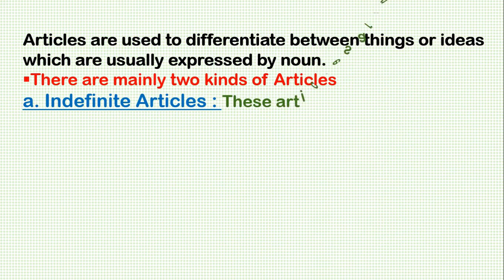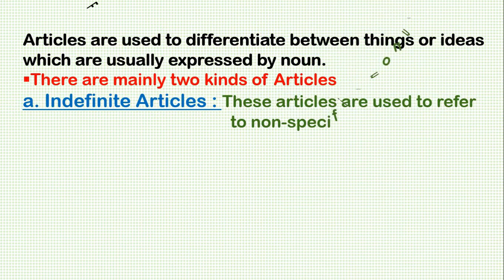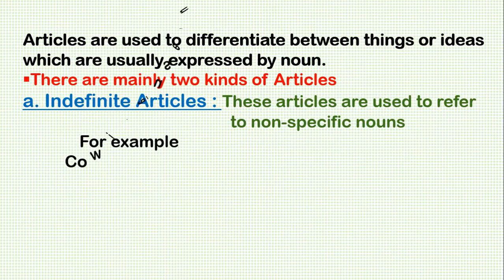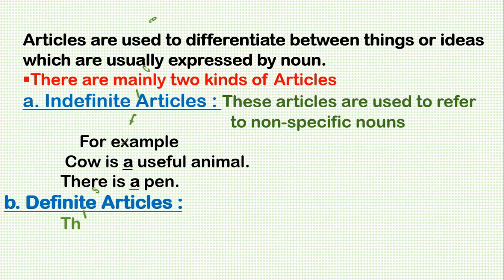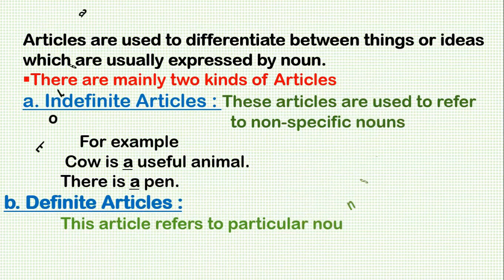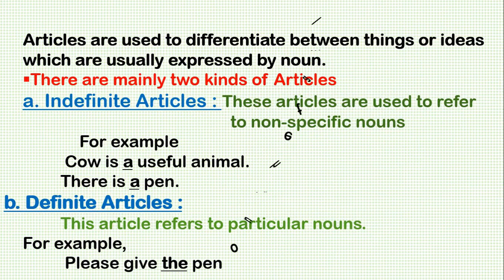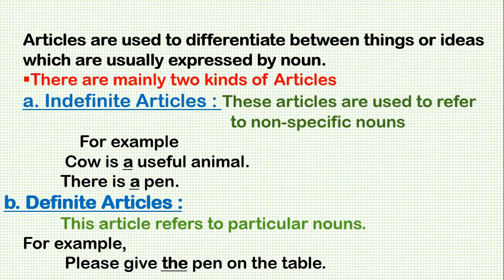There are two kinds of articles. First, indefinite articles. These articles are used to refer to non-specific nouns. For example: 'A cow is a useful animal.' 'There is a fan.' On the other hand, definite articles refer to particular nouns. For example: 'Please give the fan on the table.'